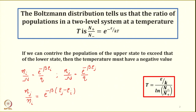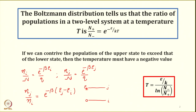Let us now discuss this in terms of temperature. For a two-level system with states 1 and 2, the i-th and j-th states can be viewed as a ground state at energy e_0 and an upper excited state at energy e. Based on the expression derived, this gives us the ratio of populations of the two states. If we consider this two-level system with a ground state and a first excited state at energy e, how do we write the population?